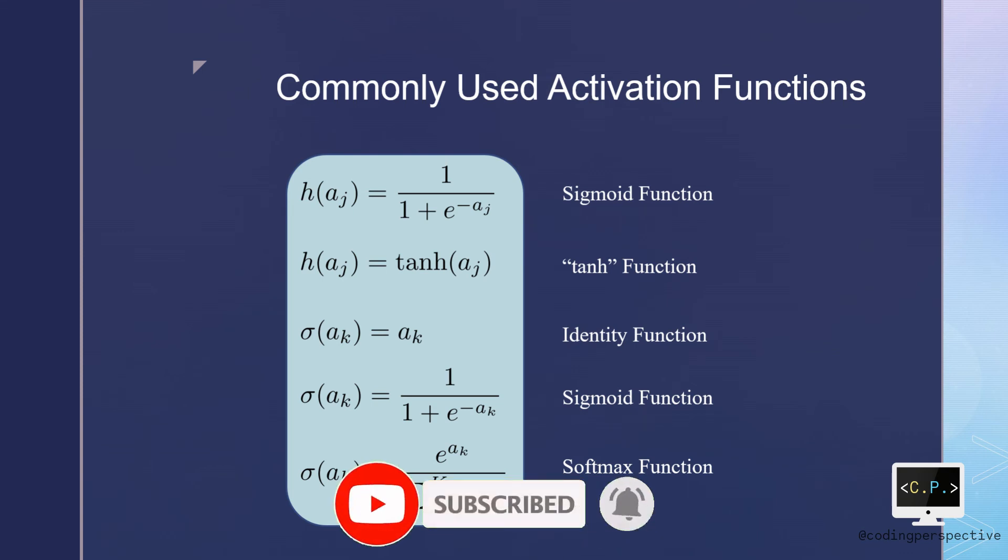The sigmoid function is defined as 1 over 1 plus e to the power minus aj. The second commonly used one is tanh function, where the values of aj's are taking values in between 0 and 1 when they are used inside of the tanh function.